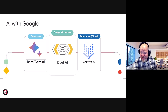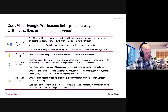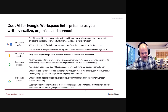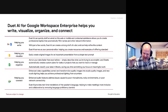Isn't that one of the main issues people are concerned about — security and safety? This slide describes the different aspects of these products coming out, features that are part of Workspace they call Duet. Duet is the umbrella: Help Me Write is in Docs, Help Me Visualize is in Slides, and Help Me Organize is in Sheets.